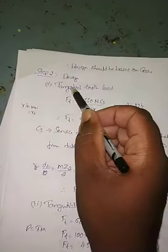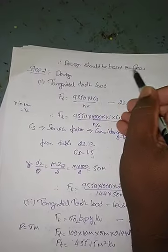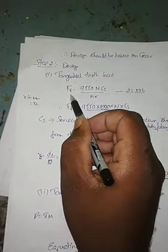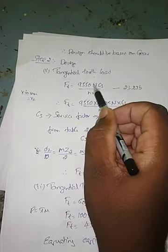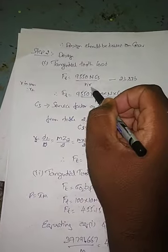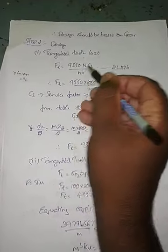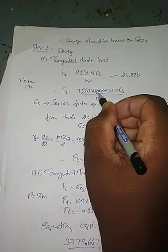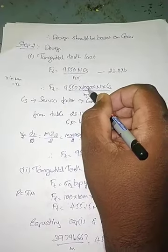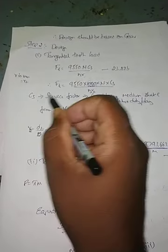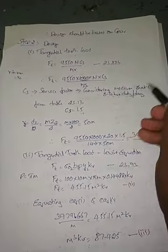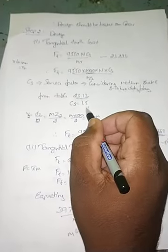Step 2: Design based on the weaker member (gear). First, finding tangential tooth load using the Buckingham equation: FT = (9550 × 1000 × N × CS) / (N2 × R2), where N = 20 kW. Since no service condition is specified, assuming medium shock, 8 to 10 hours duty per day; from table 23.13, service factor CS = 1.5. The radius R2 = D2/2 = (M × Z2)/2 = 50M.